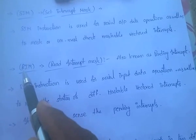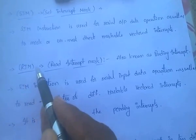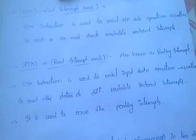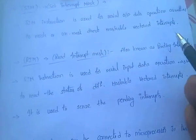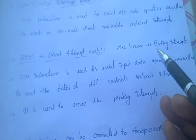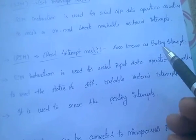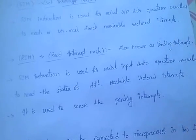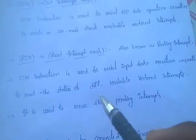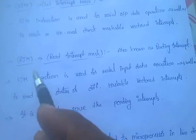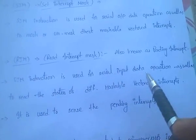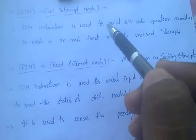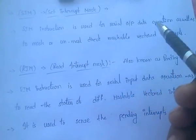RIM is nothing but Read Interrupt Mask. It is also known as pending interrupt. It is used to sense the pending interrupts. This RIM instruction is used for serial input data operation.